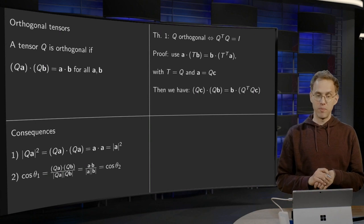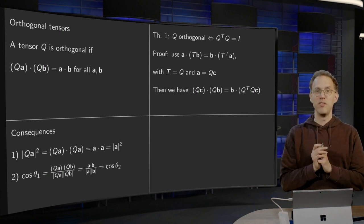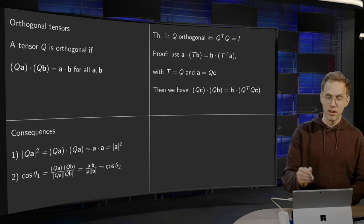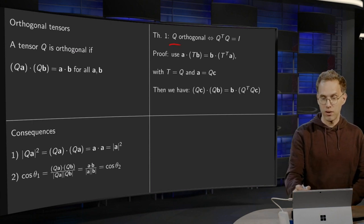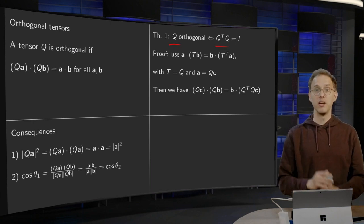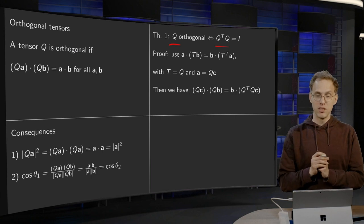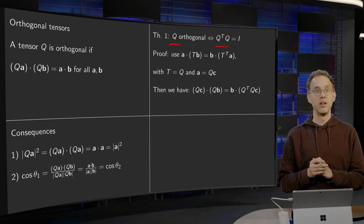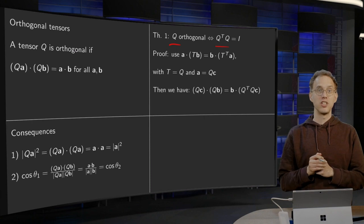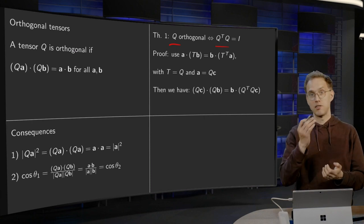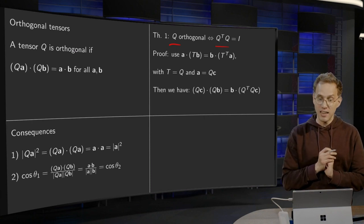Now we have a very useful theorem. This is probably the way you know from linear algebra: Q is orthogonal if and only if Q^T Q is identity. In linear algebra terms, a matrix is orthogonal if the matrix transpose times the matrix is the identity matrix.